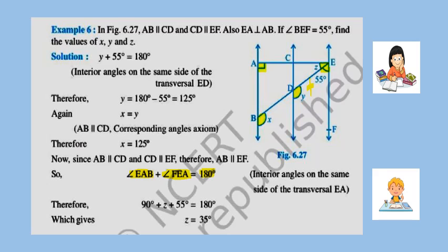In the next example: AB is parallel to CD, and CD is parallel to EF. Locate lines AB, CD, and EF in the figure. EA is perpendicular to AB, making a 90-degree angle at A. Angle BEF is given as 55 degrees. We have to find the values of X, Y, and Z.